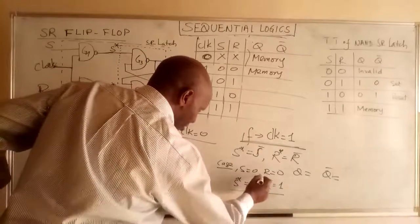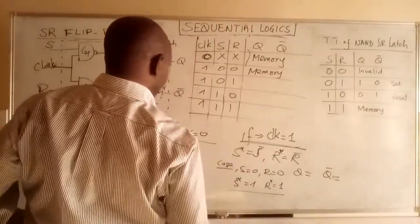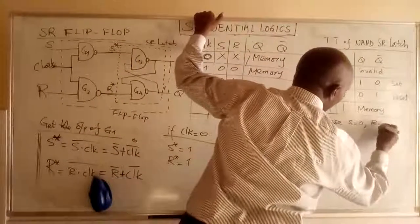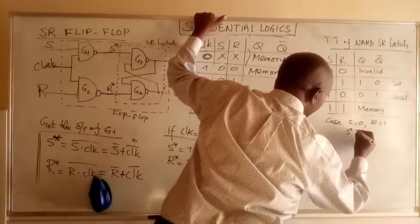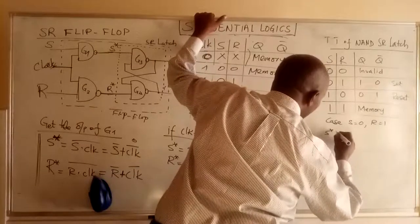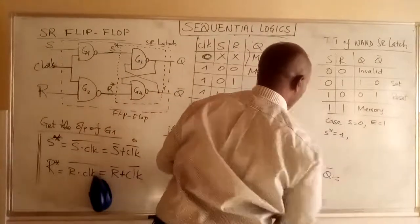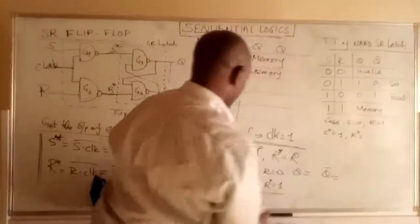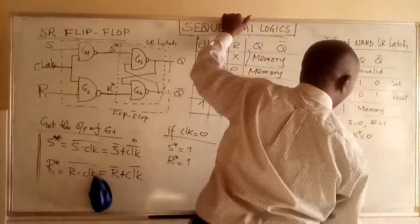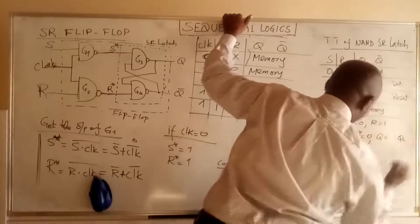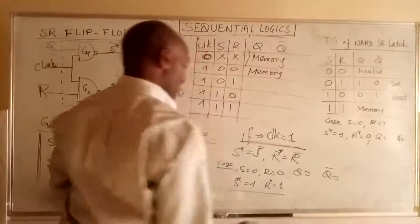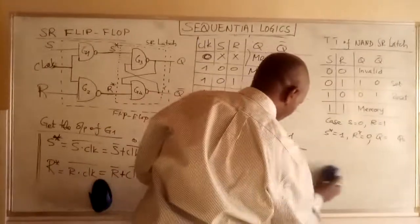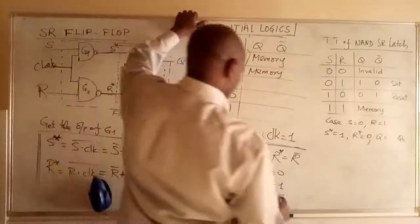Now case S=0, R=1: S* = 0̄ = 1, and R* = 1̄ = 0. So S*=1 and R*=0. The inputs to the NAND latch are 1 and 0, which means Q=0 and Q̄=1 — that is memory. Wait, let me recheck: with S*=1 and R*=0, that is a reset condition.